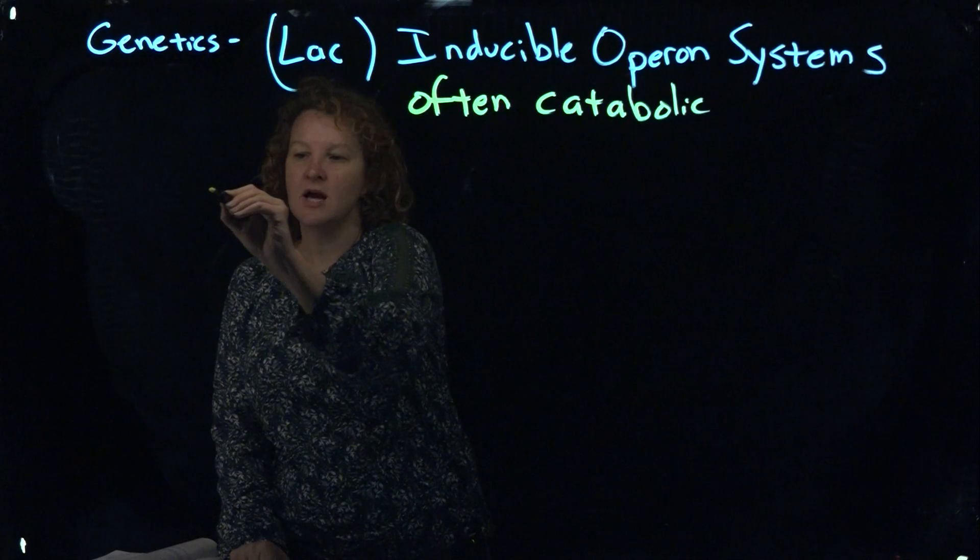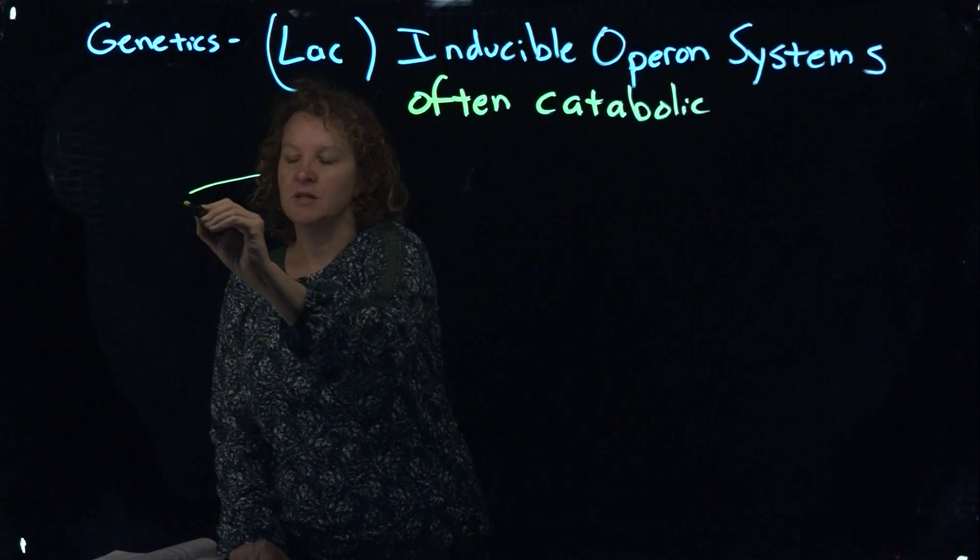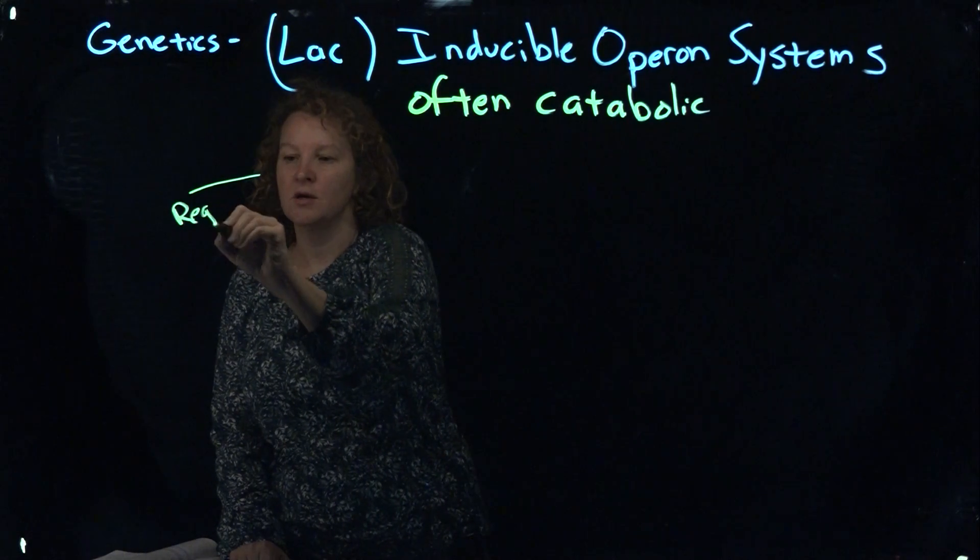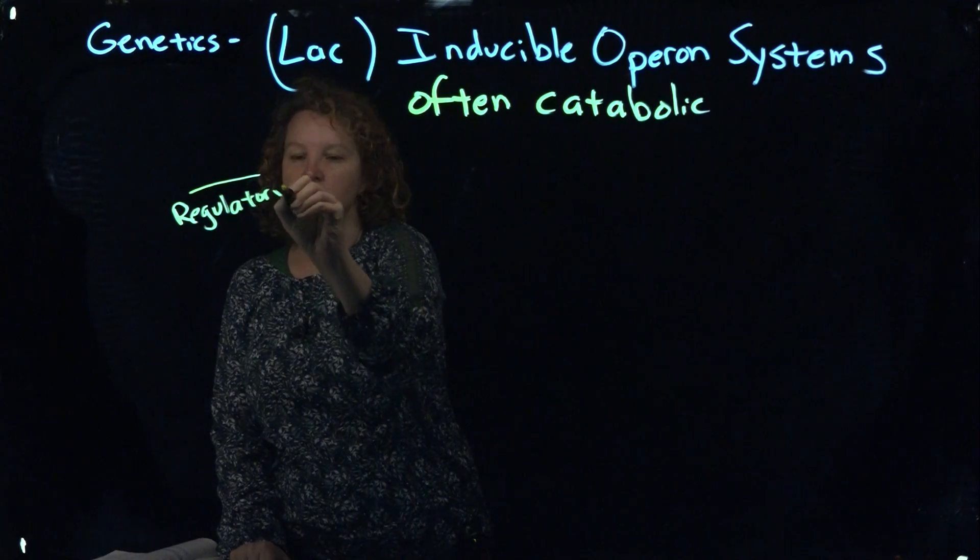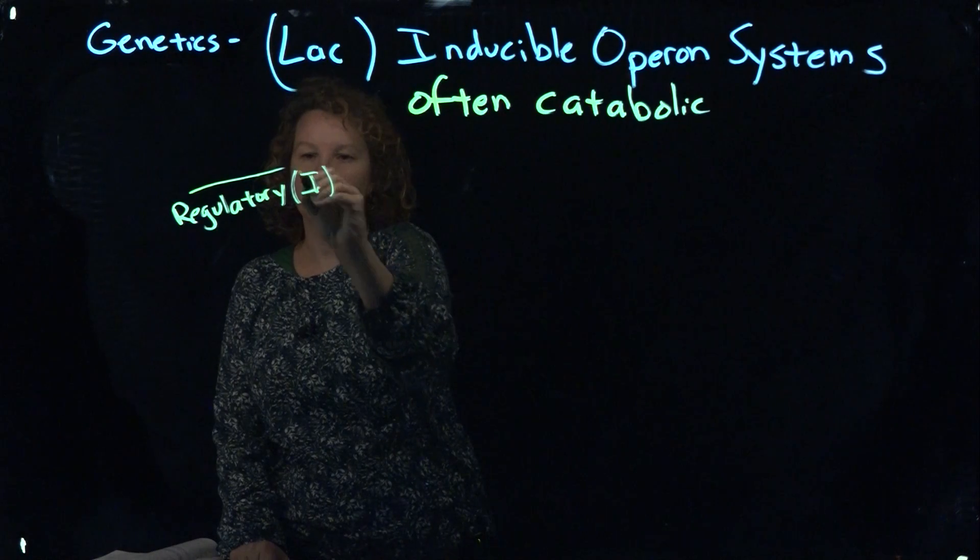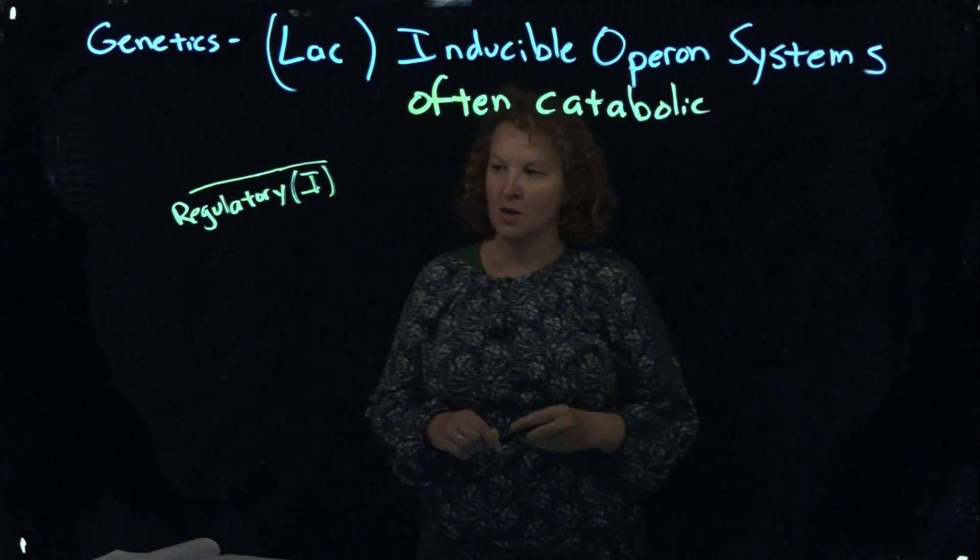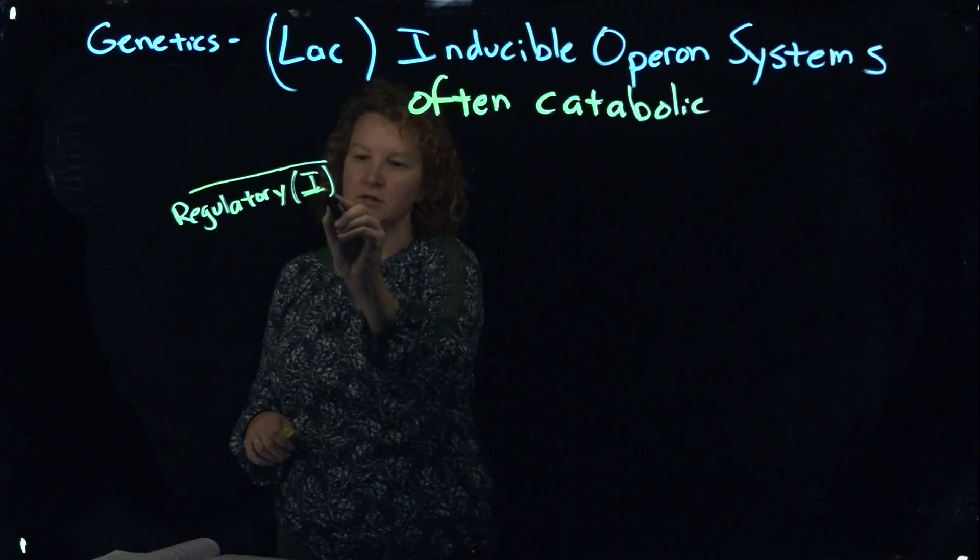So there's a region kind of on the back that gets ignored a little bit, but that's the regulatory or repressor synthesis region, and it's often with an I for the inducible aspect that's there.